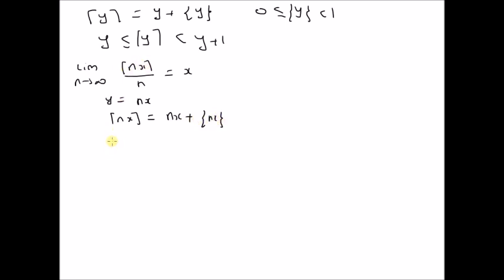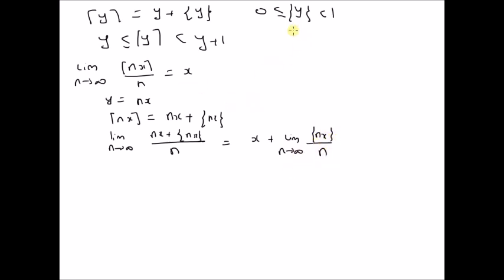The limit on the left hand side can be rewritten as the limit as n tends to infinity of nx plus {nx} divided by n. This is equal to x plus the limit as n tends to infinity of {nx} divided by n. Since the fraction {y} is always between 0 and 1, so is {nx}. In the limit, this fraction divided by n becomes 0. Therefore, this is equal to x.